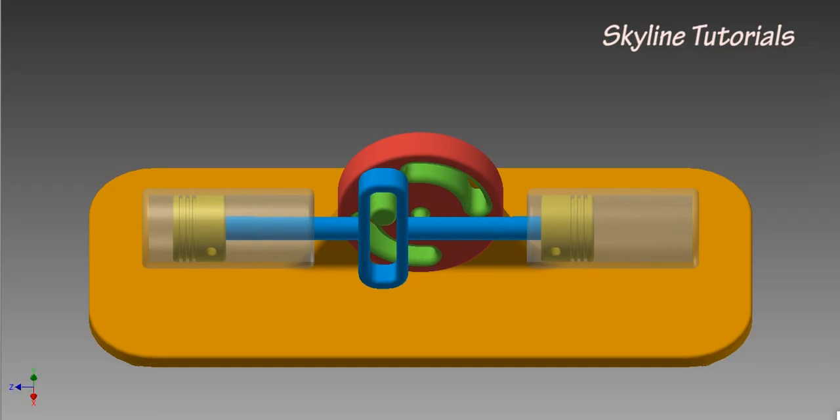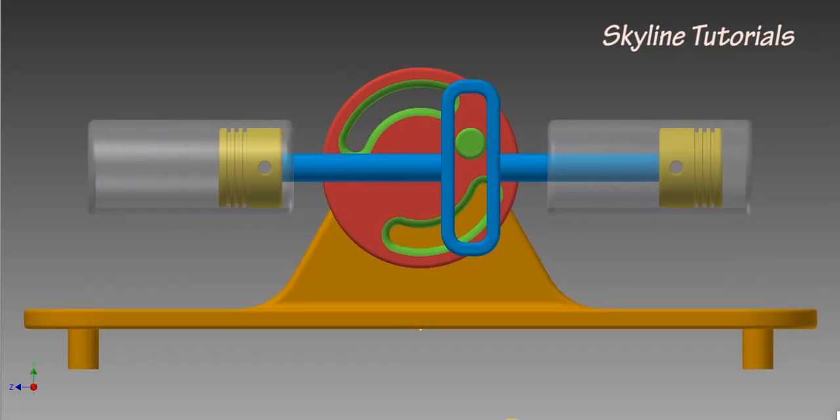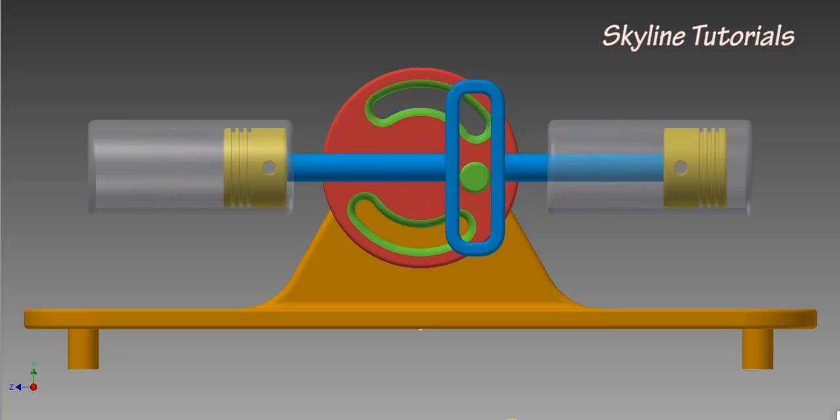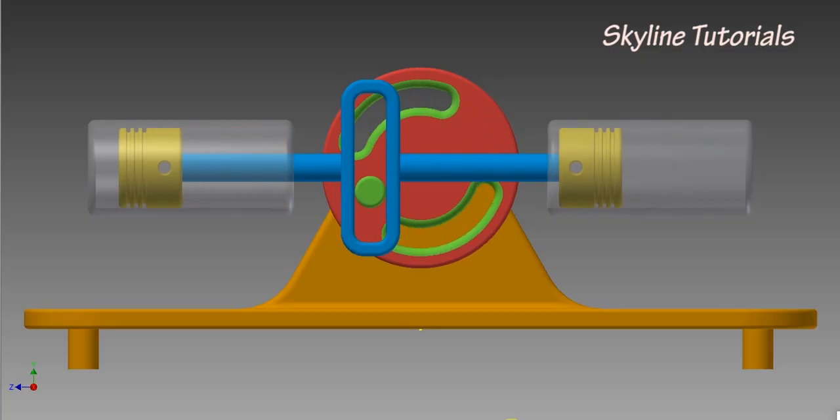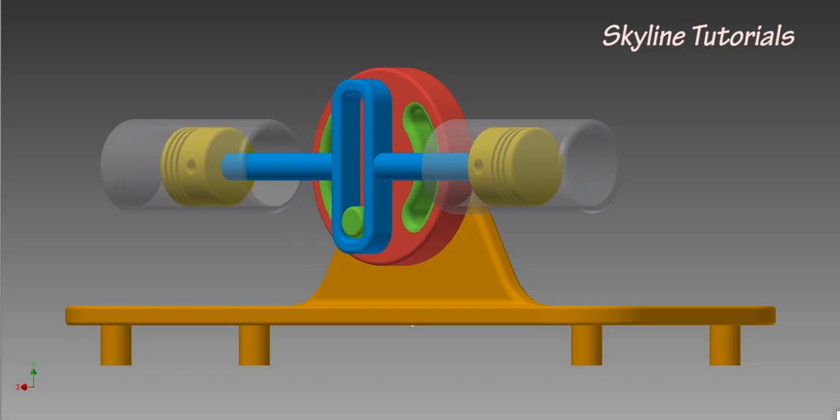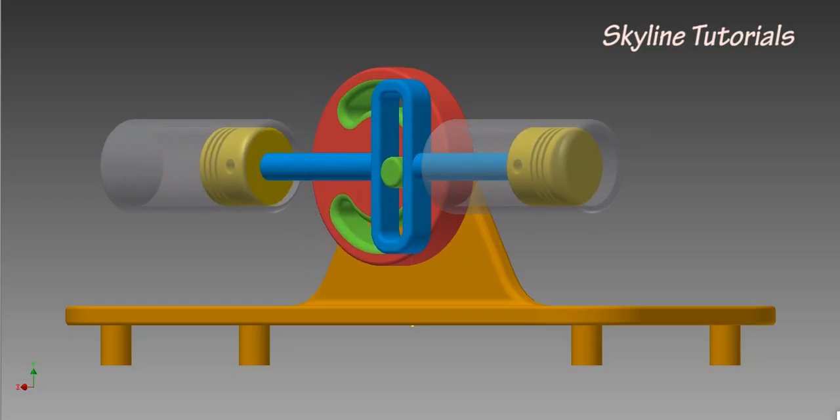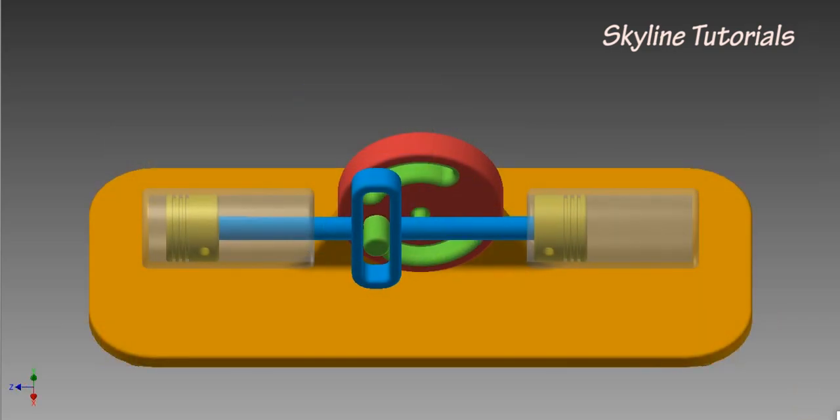The advantages of this mechanism compared to a standard crankshaft and connecting rod setup are higher torque output with smaller cylinder size, fewer moving parts and hence smoother operation, higher percentage of time spent at top dead center, improving engine efficiency.